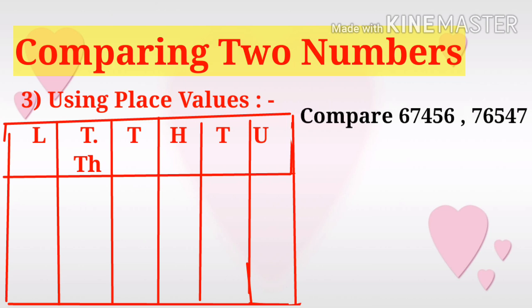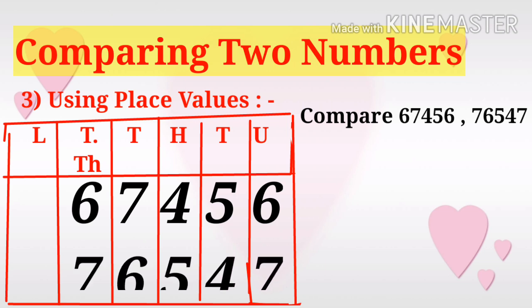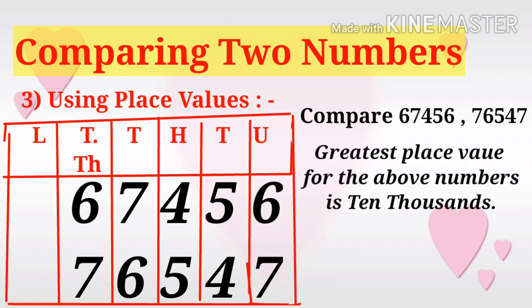Write both numbers in their place values exactly. First, observe that the greatest place value for the above numbers is ten thousands. So we compare the digit in the ten thousands place only.